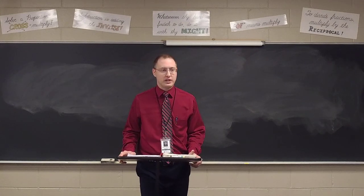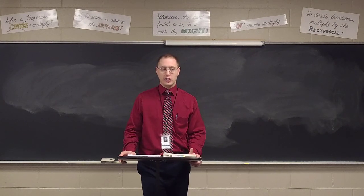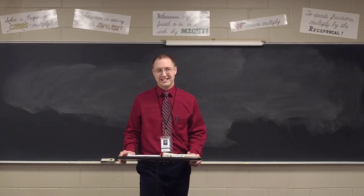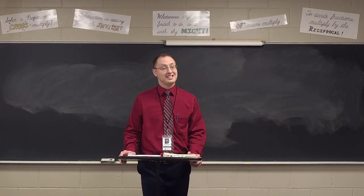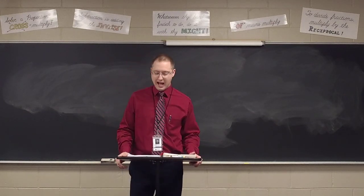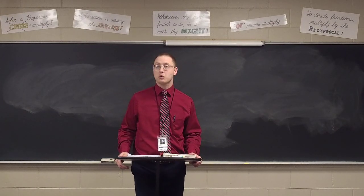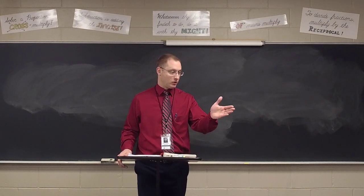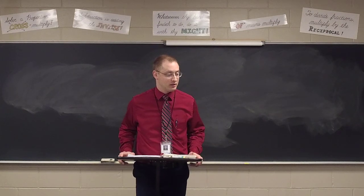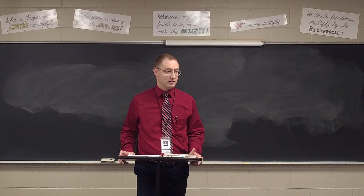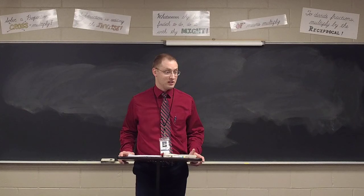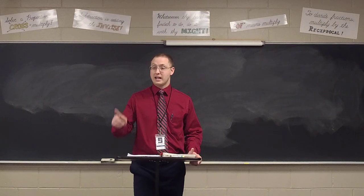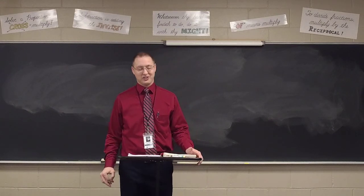What do we call a region within a circle bounded by a chord and its arc? A segment of a circle. Good. If an angle is inscribed in a segment that is equal to a semicircle — bounded by a diameter and a semicircle — any angle inscribed in a semicircle is a right angle.